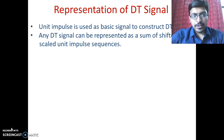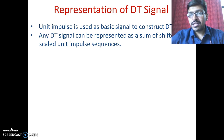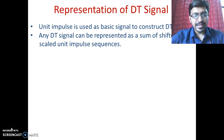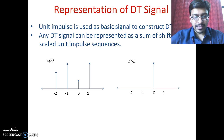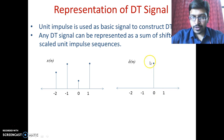Before going to that, first we will see how a discrete-time signal can be represented with the help of a unit impulse sequence. The unit impulse sequence is used as a basic signal to construct the discrete-time signal. Any discrete-time signal can be represented as a sum of shifted and scaled unit impulse sequences. We will illustrate this with an example. Let us consider x(n) as the sequence we want to construct with the help of delta(n). Here delta(n) is present for n equal to zero and its magnitude is one, so it is a unit impulse sequence.